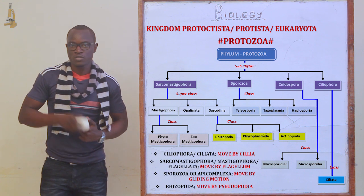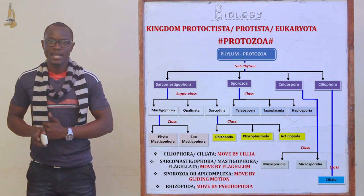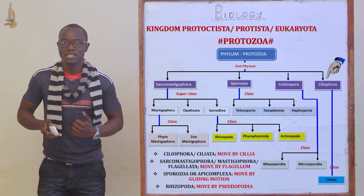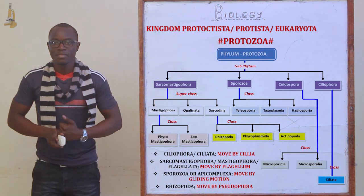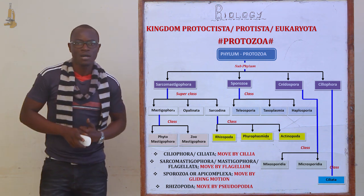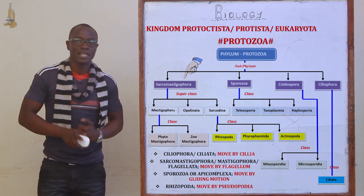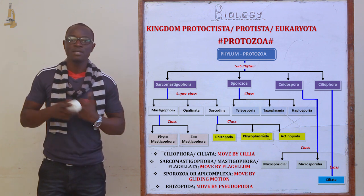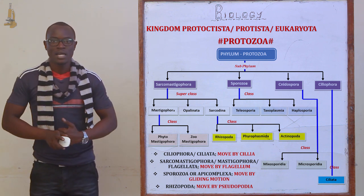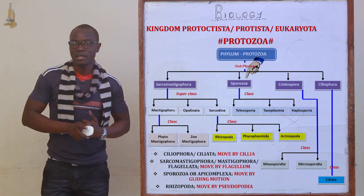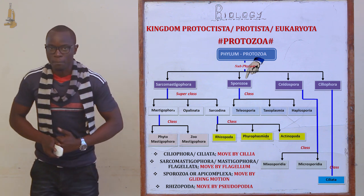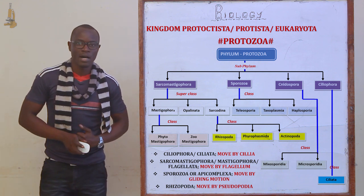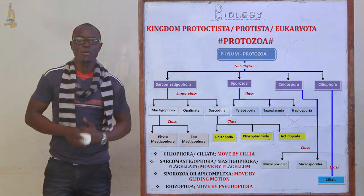The protozoa are divided into seven phyla. The first phylum is Rhizopoda. The next one is Ciliophora, or Ciliata — they use cilia for movement. Then there is Mastigophora, or Flagellata — they use flagella for movement. Finally, the last phylum is Sporozoa, or Apicomplexa. We'll meet in the next session to discuss more on the phylum Rhizopoda.